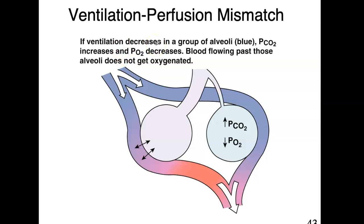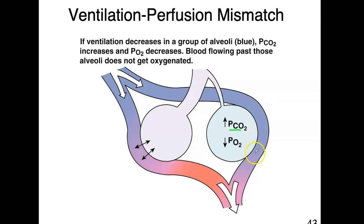If ventilation decreases — this is showing ventilation decreasing in a group of alveoli — then the partial pressure of carbon dioxide increases, and the PO2 is going to decrease. The blood that's flowing past those alveoli is not going to get oxygenated. So if you have some narrowing and not enough air coming in, the area is very high in carbon dioxide, and this capillary comes in blue and leaves blue.